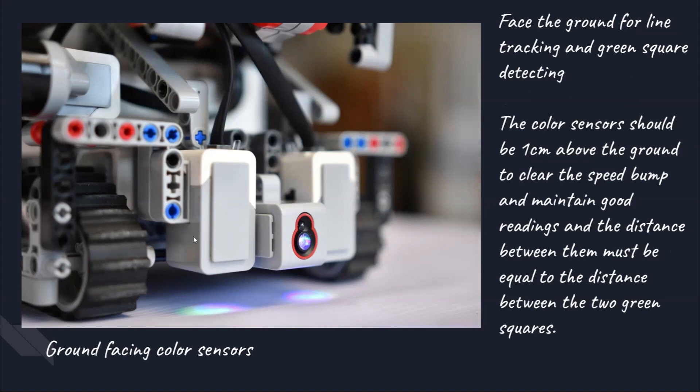Next, we will be talking about the down-facing colour sensors. There are two down-facing colour sensors that face the ground for line tracking and used for the obstacle. One of the things we had to know when mounting these colour sensors is making sure that the sensors will not see a lot of light.